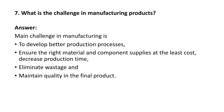Next question: what is the challenge in manufacturing a product? The main challenge in manufacturing is to develop a better production process. A production engineer must develop a better production process, ensure the right material and component supplies at least cost, and decrease production time. He must also ensure supply of material as per demand, eliminate waste — in lean manufacturing there are 7 or 8 different wastes to reduce — and maintain the quality of the final product.